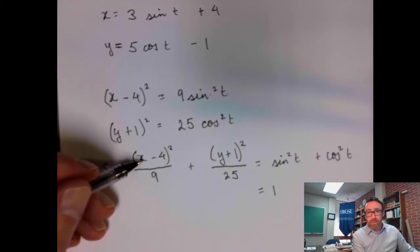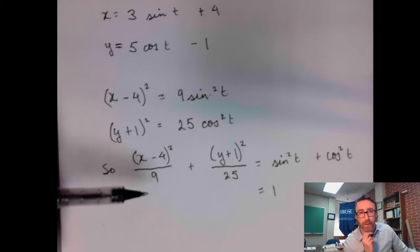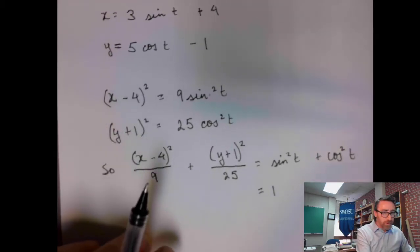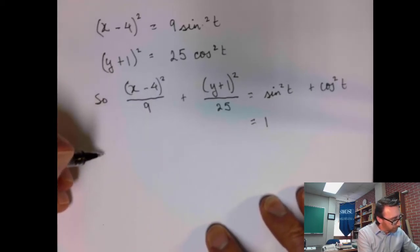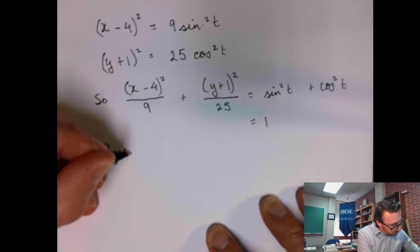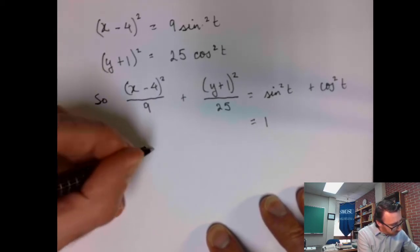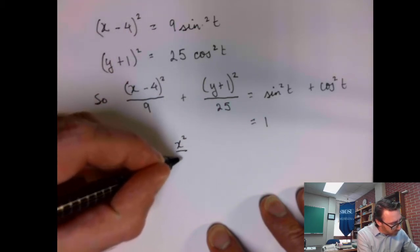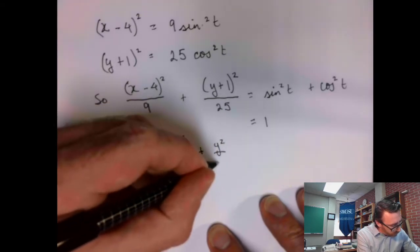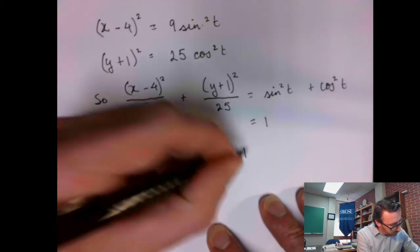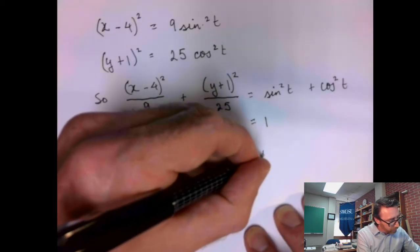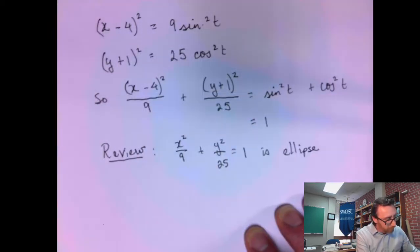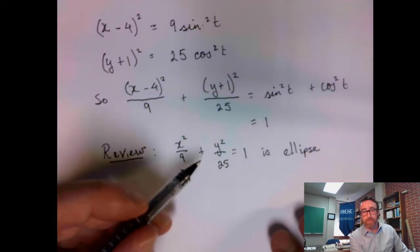Now, I want you to think back to your high school algebra class here. Think of an equation like this. If I looked at this equation, if I had x squared over 9 plus y squared over 25, if that were equal to 1, that is an ellipse.